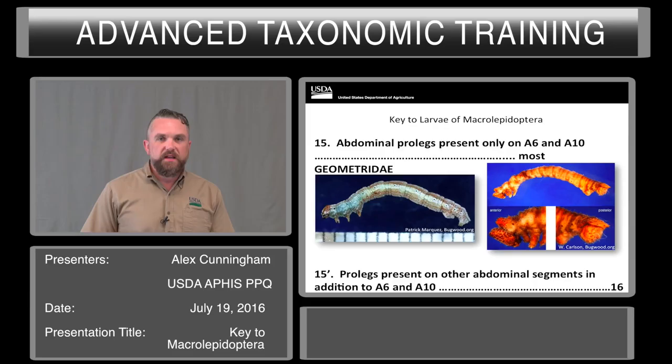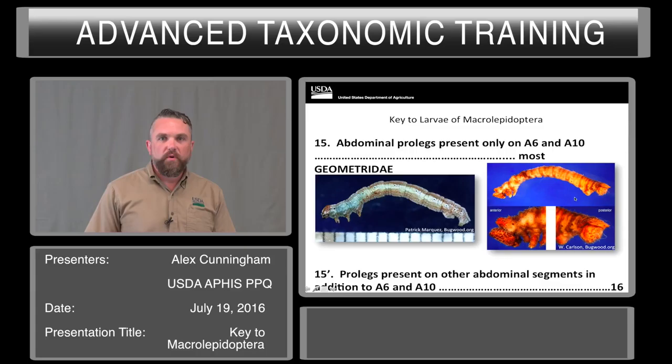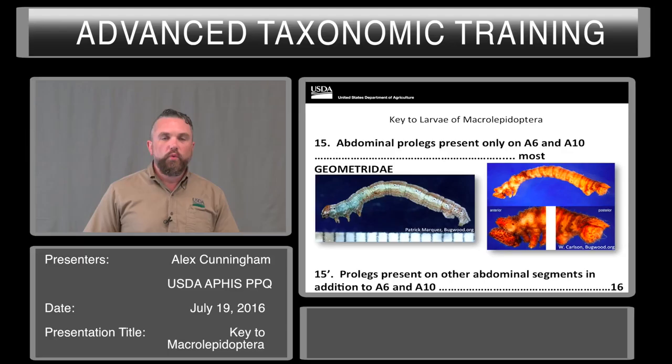If prolegs are present only on A6 and A10, most times that is a geometrid — the famous and very characteristic inchworms. Those are the geometrids. For couplet 15 prime, prolegs present on other abdominal segments in addition to A6 and A10 — any other abdominal segments whatsoever with a proleg, we go to couplet 16. Now we're going to start looking more carefully at those primary setae.